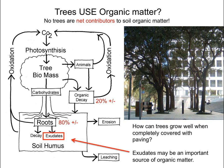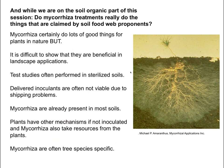Leaves, as they decay, only contribute about 20% of the total organic movement into the soil. About 80% may come from the roots — either roots living, dying, and decaying, or through exudates, where pure carbohydrates from photosynthesis go directly into the soil from the roots. This number can be quite high depending on the species.